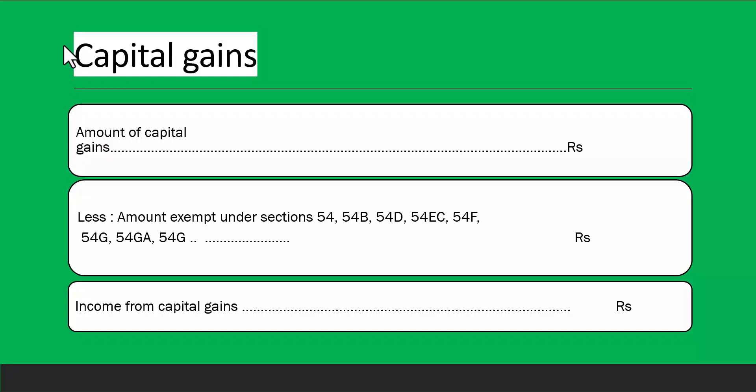To illustrate capital gains: suppose you have sold a house — you bought it for 50 lakh rupees and sold it for 2 crores. Your capital gain would be 1 crore 50 lakhs. Let me show you a quick example on an Excel sheet.